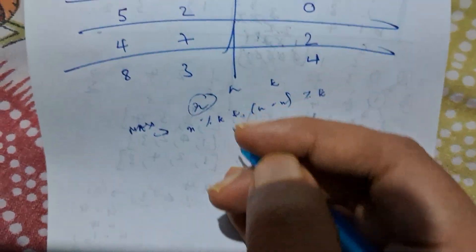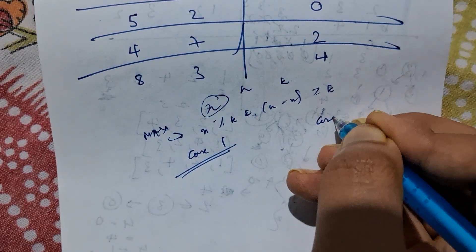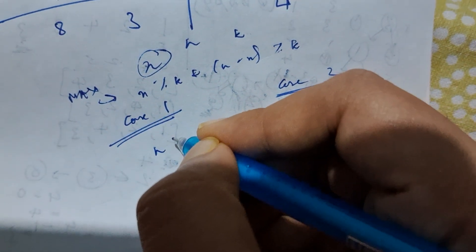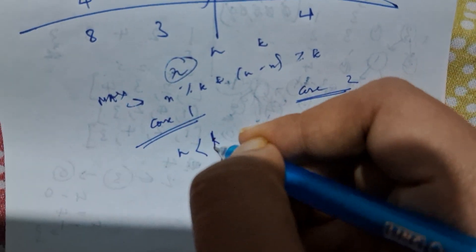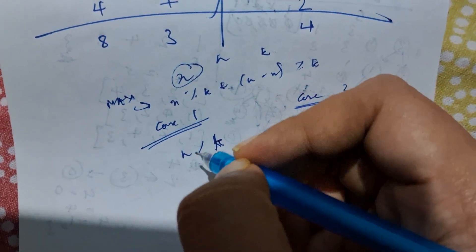So there are two cases. Case 2 is a little bit complex, so let me get you Case 1 first. Case 1 is when n is lesser than k. If n is lesser than k, you are only getting n numbers.